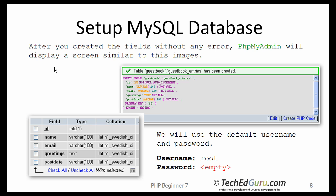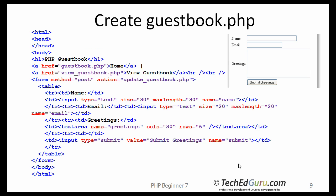Continuing with setting up the database — after you have created the fields without any errors, phpMyAdmin will display a screen similar to this image. We are going to leave the username as root and the password empty — no password for this database. Then you are going to create your guestbook.php file, essentially typing in the text as shown on this page, and save it as guestbook.php.